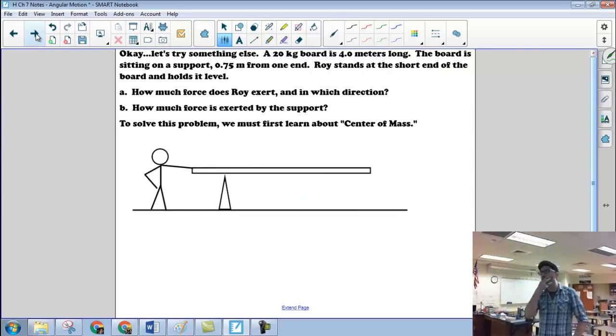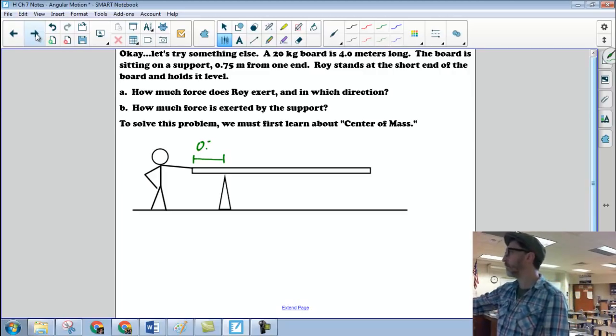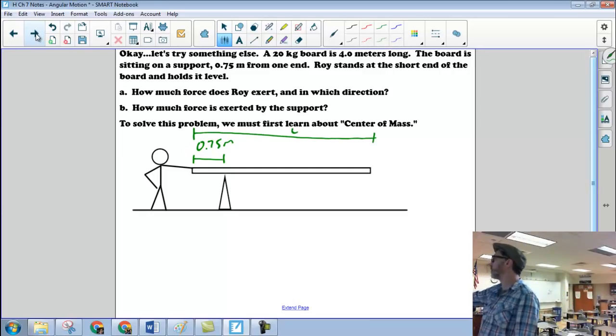So suppose you had something like this. We've got this 20 kilogram board, it's four meters long. The board is sitting on a support 0.75 meters from one end. So this little distance here is 0.75 meters. The whole board is four meters long. So you can see that if Roy wasn't there, then the board would fall over that way, right? Just by kind of common sense.